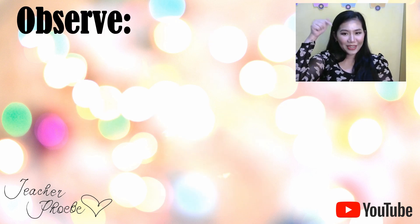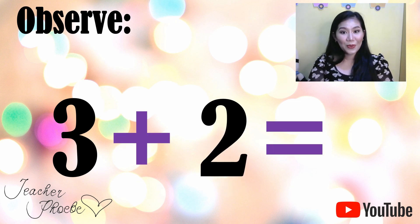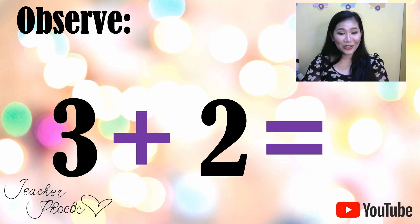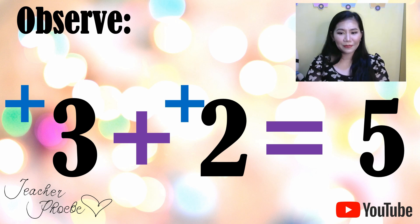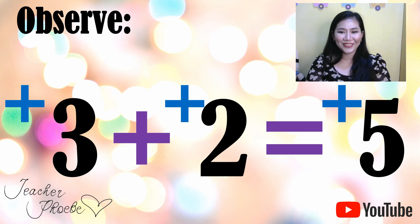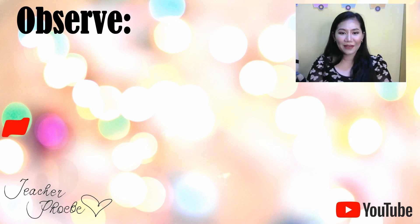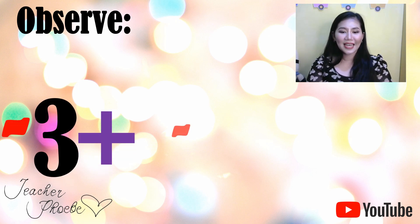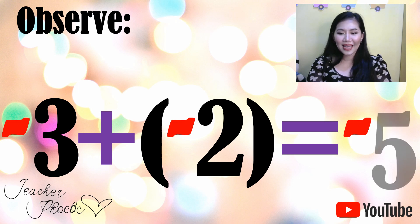Now observe the following operations on integers. First: three plus two equals what? The answer is five. Observe — three is positive, two is positive, therefore the answer, five, is also positive. Next, observe the second situation: negative three plus negative two equals what? The answer is negative five.